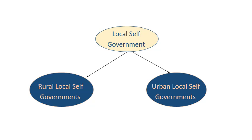Communities, both urban and rural, require public utilities, which are also called civic amenities. The responsibility of managing and controlling civic amenities lies with the government. The people of every village, town, and city elect representatives to govern their community. In other words, people themselves govern their community through their representatives. This system is therefore called local self-government. In India, the local self-government body for an urban area is called the municipality.